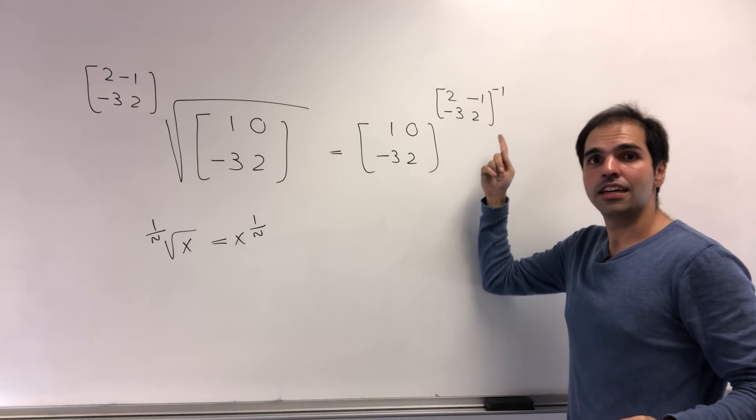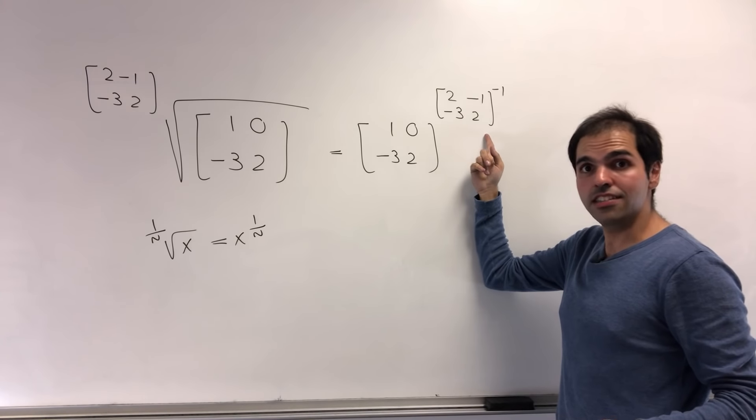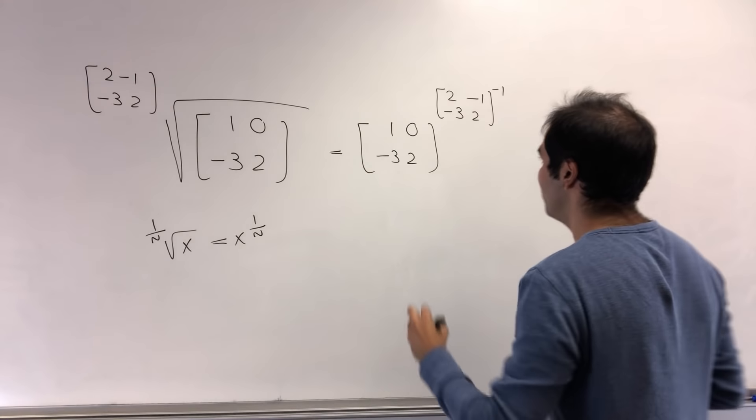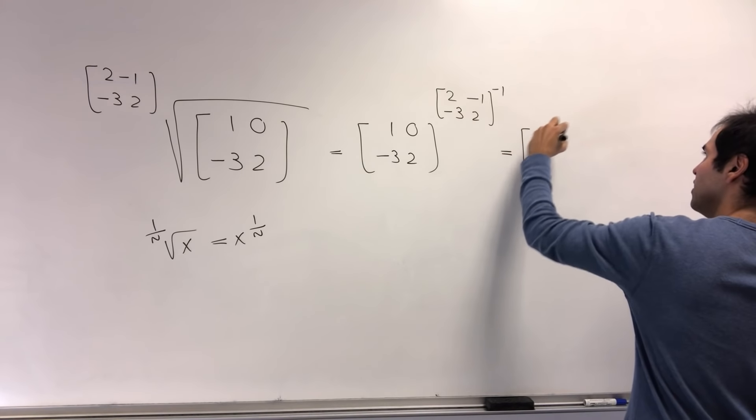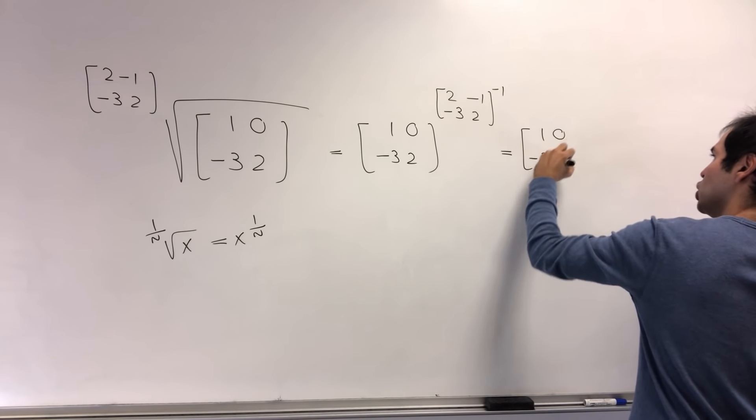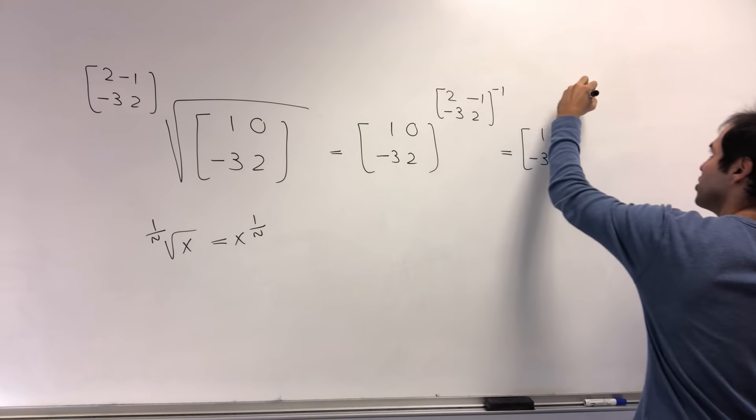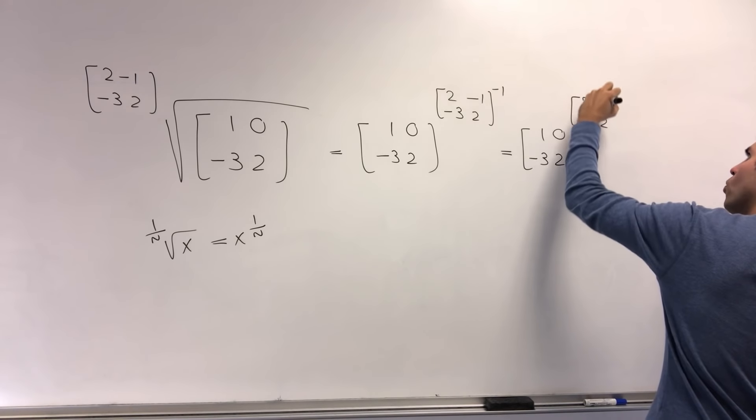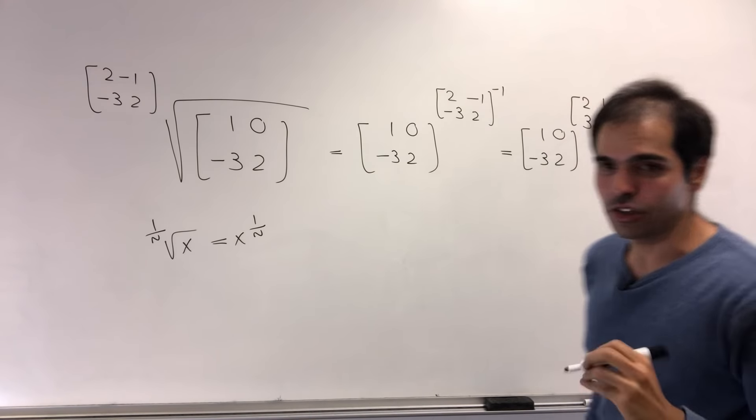But luckily, this inverse is easy to calculate because it has determinant 1. So it just becomes 1, 0, minus 3, 2. And I believe it's just 2, 1, 3, 2.